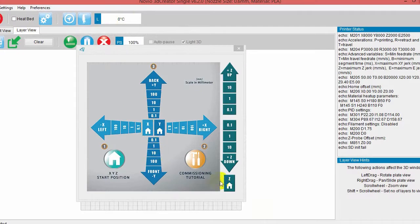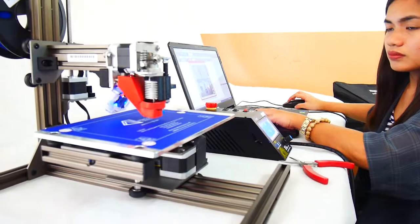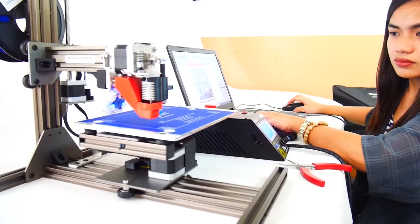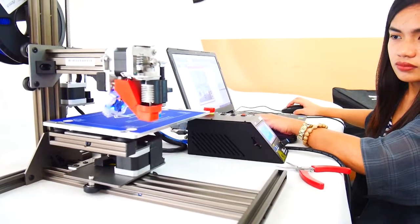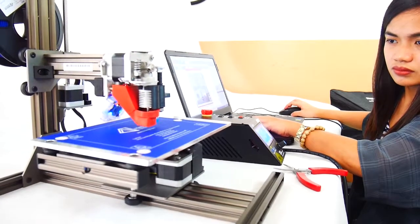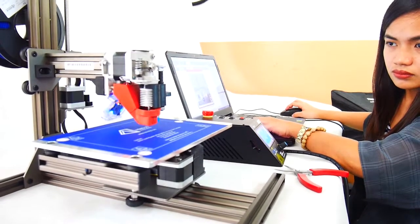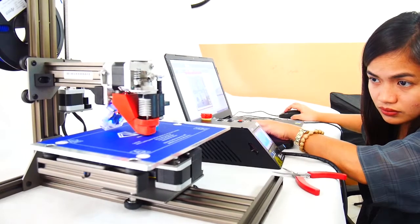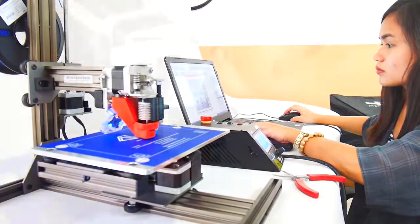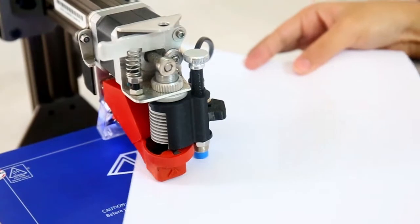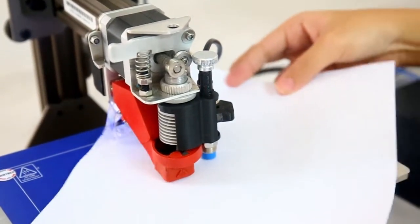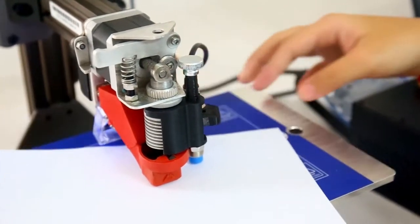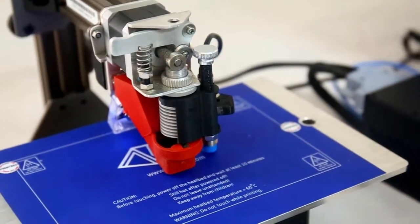Then click XYZ home button. The extruder will be placed at the center of the print plate. Check if the tip is leveled at this mapping point with the use of a paper. A paper-thin gap is required to know if it is already leveled.